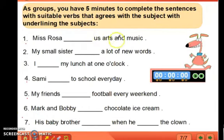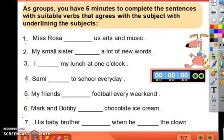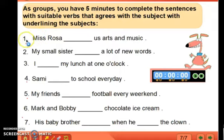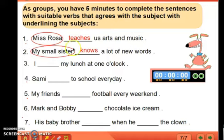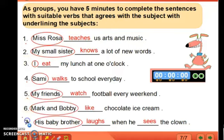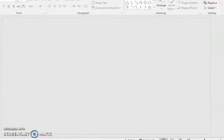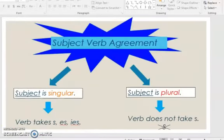Now you have to add an action verb to complete the sentence. 'Miss Rosa ___ us arts and music.' Miss Rosa is a teacher, so what action verb can you use? Simply 'teaches.' Miss Rosa is the subject. 'My small sister ___ a lot of new words' — for example, 'knows.' My small sister knows a lot of new words. The same is applicable for the rest of the sentences.